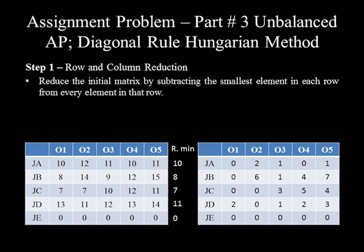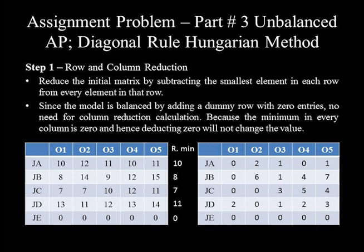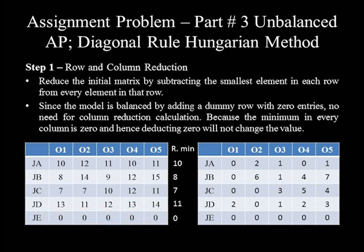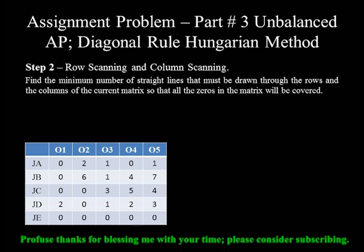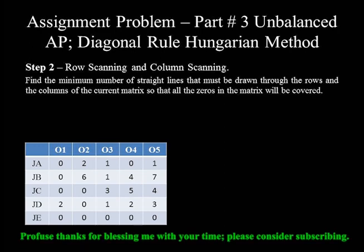So we can copy row 5 values as they are. Since we balanced the model by adding a dummy row with 0 values, no need for column reduction calculation, because the minimum value in every column is 0, and hence deducting 0 will not change the values. So let's directly proceed to row scanning and column scanning. In this step, we will find the minimum number of straight lines that must be drawn through the rows and columns of the current matrix so that all the zeros are covered.